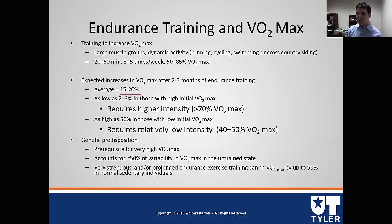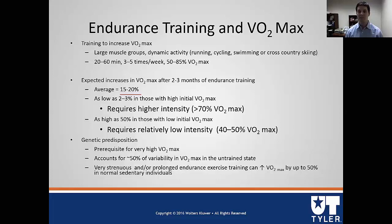One other note on endurance training: unfortunately, there is some genetic predisposition. Some people will never have a VO2 max above 80 no matter how hard they train. While VO2 max can be improved by 15%, 20%, or even 35%, there is a genetic ceiling that ultimately limits how much an individual can increase.